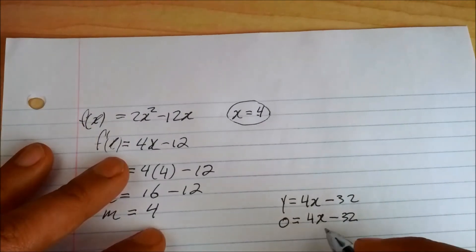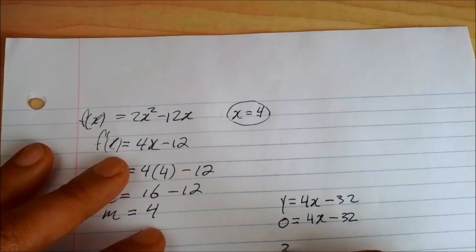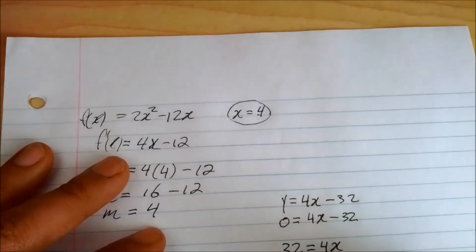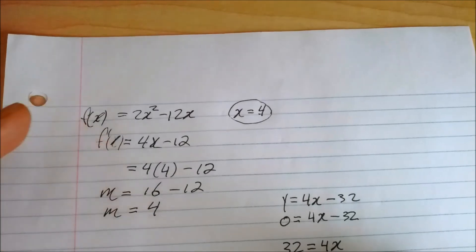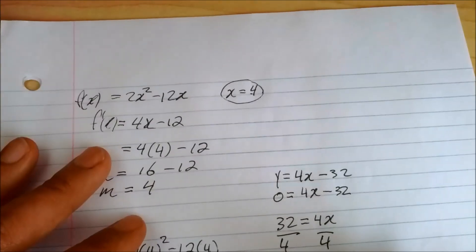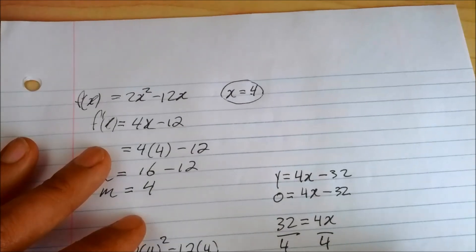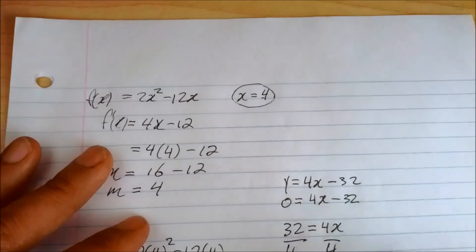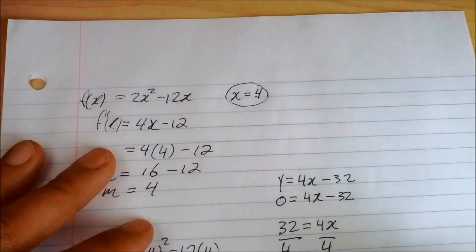So what we do here, we try to solve for x. So you can bring the 32 on this side. Now you can divide, of course. You work this down, so divide by 4. So this becomes 8 equals x. So crossing the x axis at 8 and 0.